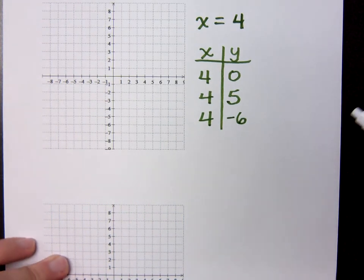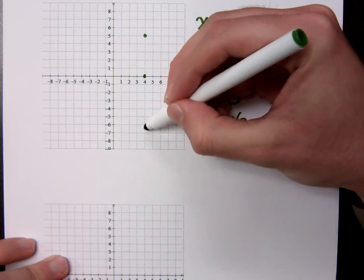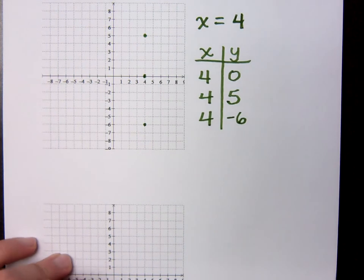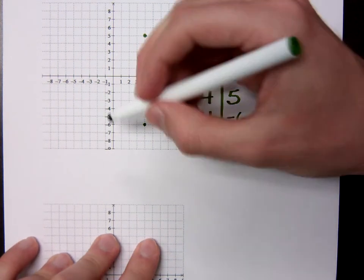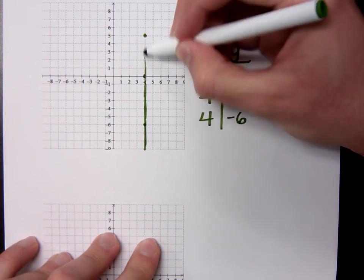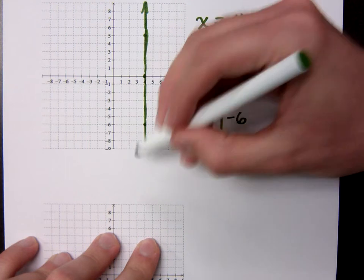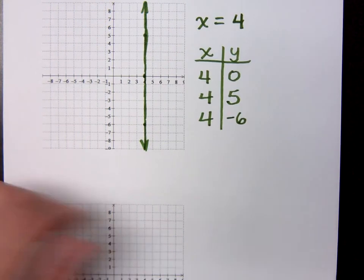Now, when you plot these points, you've got 4, 0, 4, 5, and you've got 4, negative 6. So you have another straight line because all lines are straight, but in this case, it's a vertical line, right? So that's my guy. X equals 4, right?